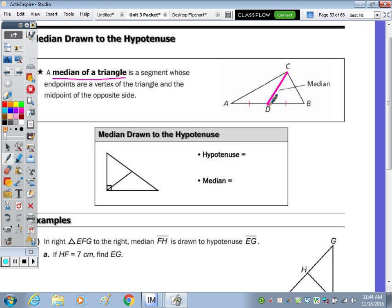So let's in this question here label the median, and it says it's drawn to the hypotenuse. The hypotenuse is here, it's the longest side of the right triangle.